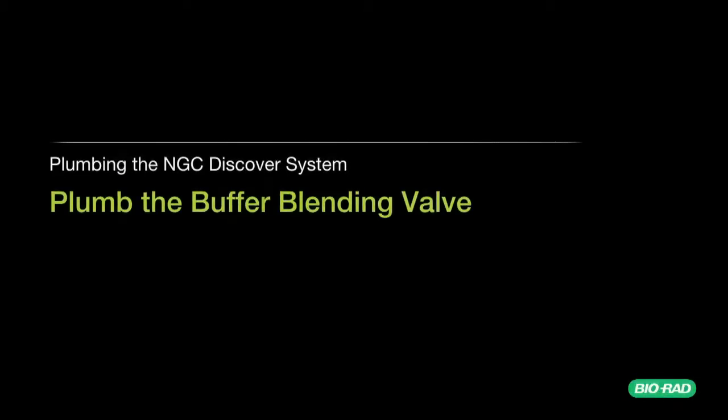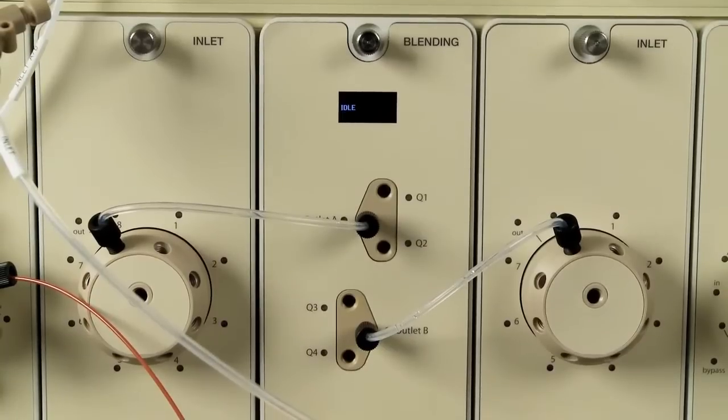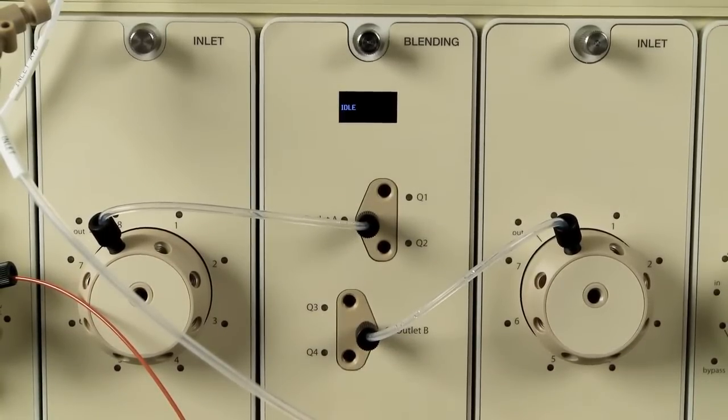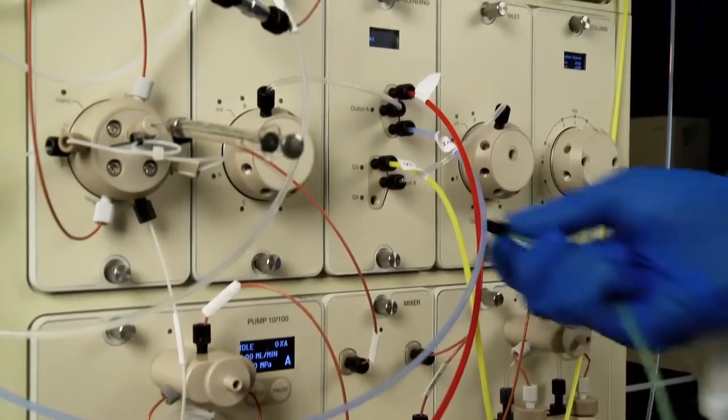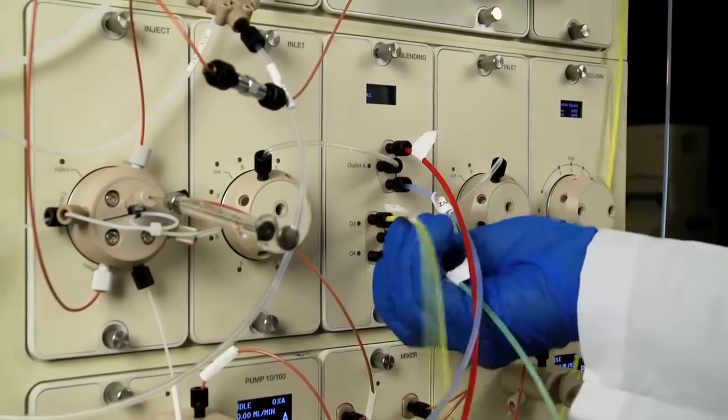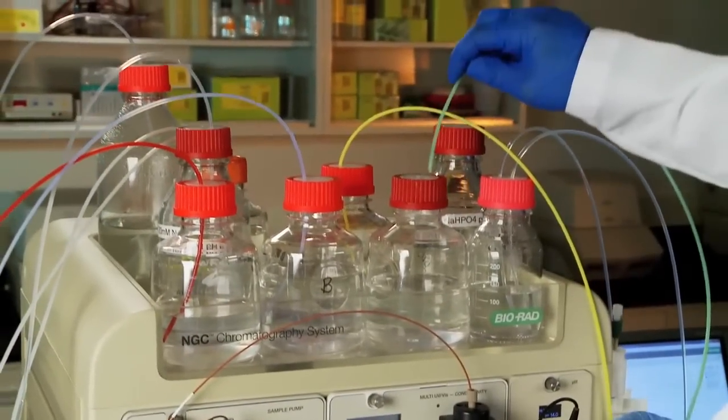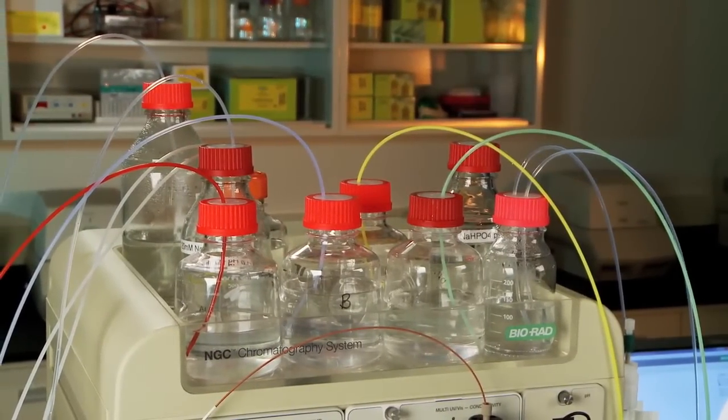Plumb the buffer blending valve. The buffer blending valve outlets will already be plumbed to the buffer inlet valves. You will make plumbing connections between the buffer inlet valves and the system pumps. Connect the inlet lines to ports Q1 through Q4 on the buffer blending valve. Place the open end of each line into the intended buffer bottle. Inlet solvent filters may be used.